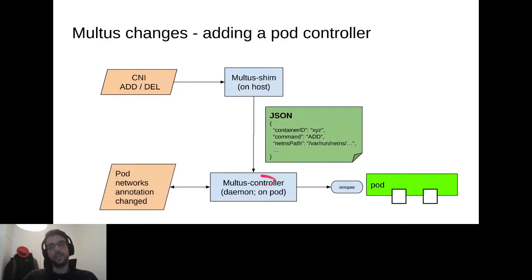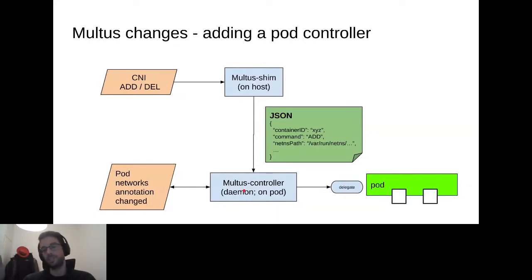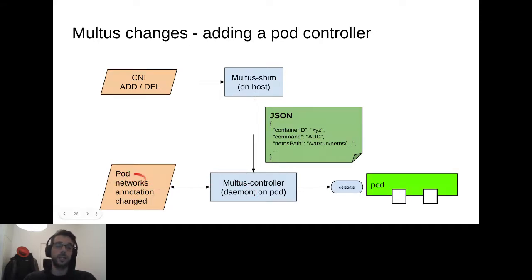This Multus controller daemon also hosts the controller loop. It exposes the RESTful API for the runtime to signal pod creation or deletion, and it also watches for changes in pod annotations and reacts to those updates by invoking the delegate plugin to create new interfaces or remove old ones.